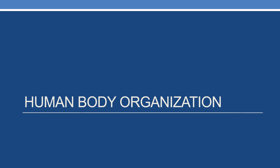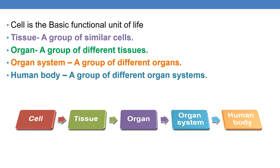First, coming to human body organization. The cell is the basic functional unit of life. A tissue is a group of similar cells — for example, adipose tissue is a group of fat cells. An organ is a group of different tissues. An organ system is a group of different organs.